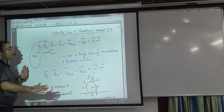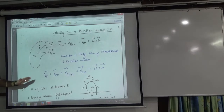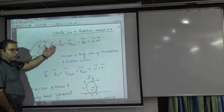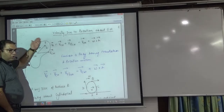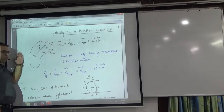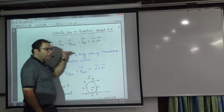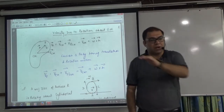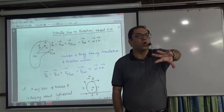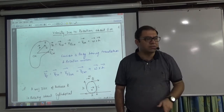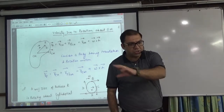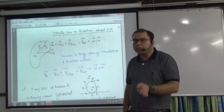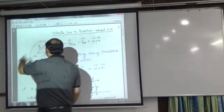The question is: velocity due to rotation about center of mass. It is saying that there is a body, this body is spinning. The body is spinning and the center of mass is also in translational motion. This means that this is a case of translation as well as rotation — like rolling. It is a combination of translation and rotation. I chose any particular particle, P.